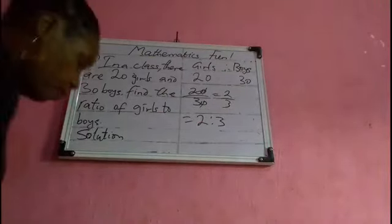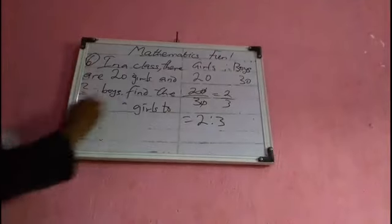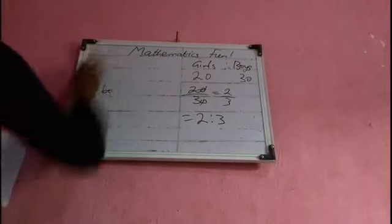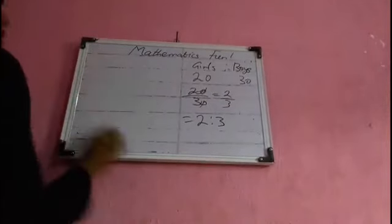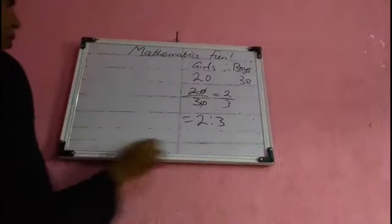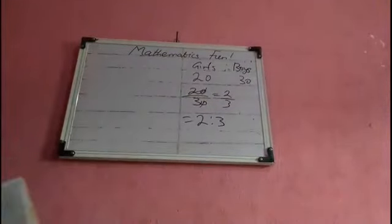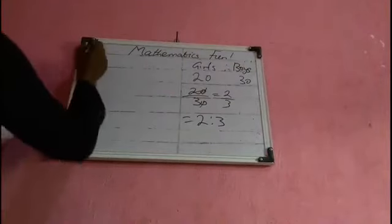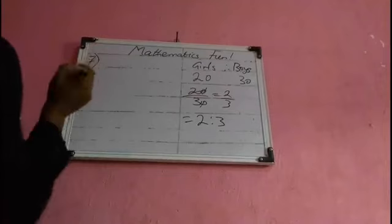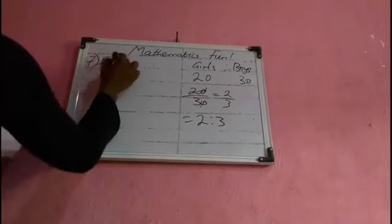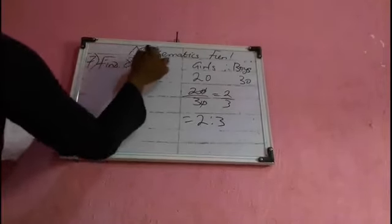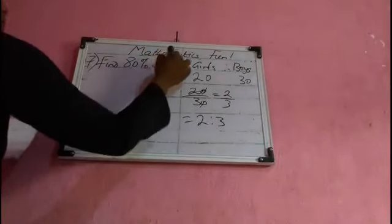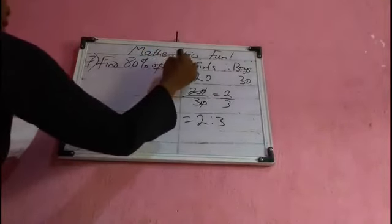Number seven: find 80% of 20 naira. This is very simple.